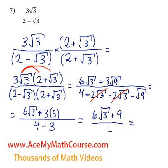And anything divided by 1 is just the same thing as before. So this is our answer. We have rationalized the fraction, and it's not even a fraction anymore. It's just 6 root 3 plus 9. That's it.